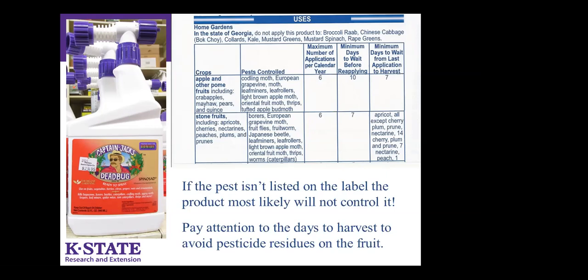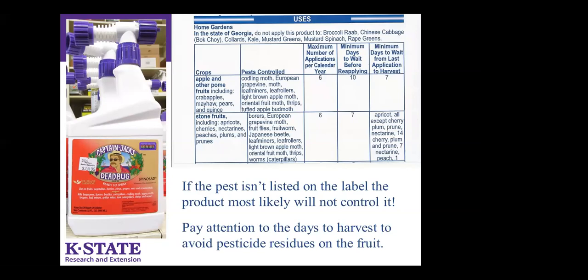For stone fruits, the days between applications are shorter and the days to harvest are a lot longer — almost twice as long for cherry, plum, and nectarine — so you need to pay attention because it's critical for your personal safety. Gordon's Liquid Fruit Tree Spray has a 14-day harvest interval — you have to wait 14 days between the last spray and harvest, true for apple, cherry, grape, and peach.